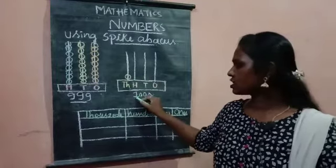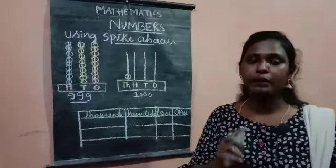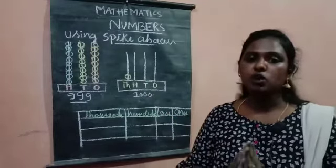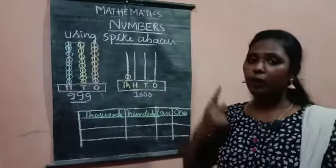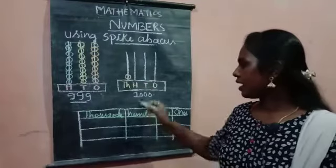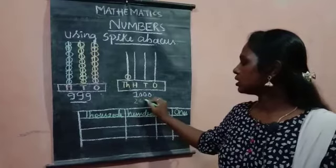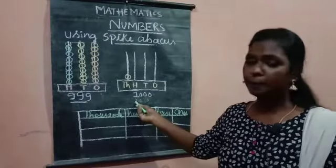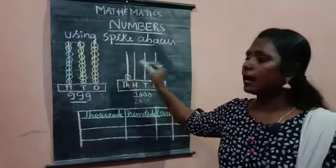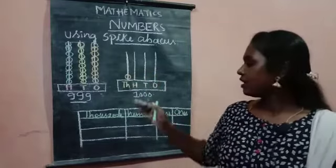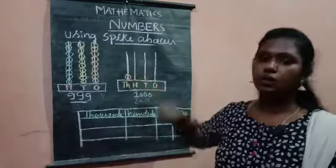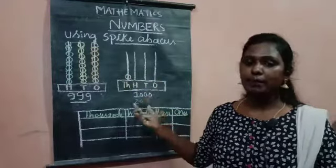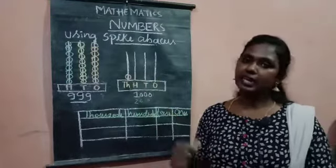But in the 1000th place, I have 1, number 1. So, because of I am having a number 1, I have written only 1 beat. Okay, if I have 2000, so if I have number 2, I should draw 2 beats. Okay, if I have number 3, I should draw 3 beats. Okay, according to the number, we have to draw beats in the abacus.